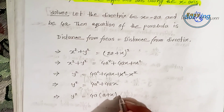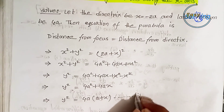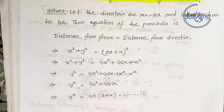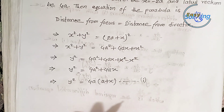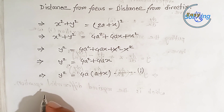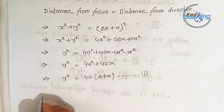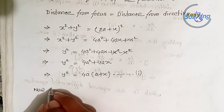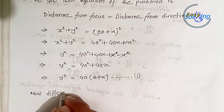Simplifying, y² = 4a² + 4ax + x² - x², which gives y² = 4a(a + x). This is equation number 1.